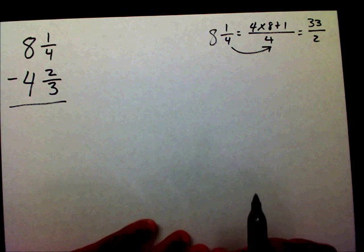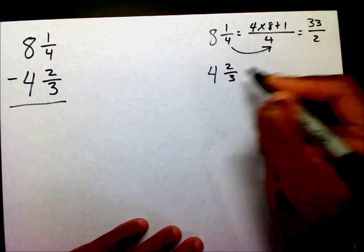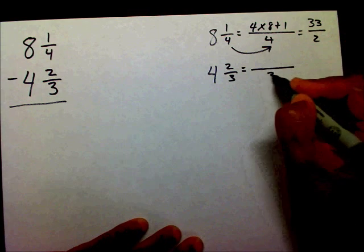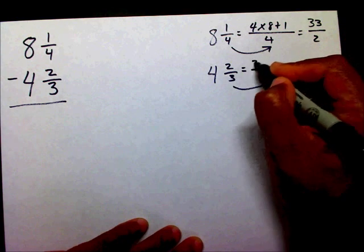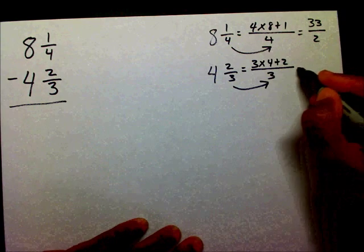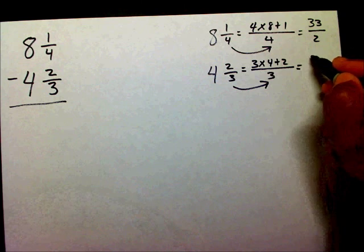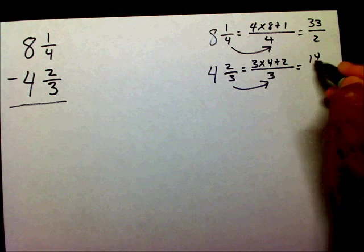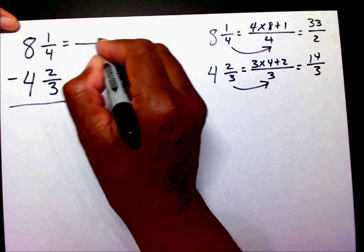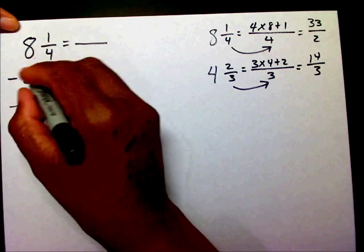Then we're going to take 4 and 2 thirds and change that into an improper fraction. Bring your 3 over. That's 3 times 4 plus 2. So that gives you 3 times 4 is 12, plus 2 is 14 thirds. So we've changed our mixed numbers into improper fractions: 33 fourths minus 14 thirds.